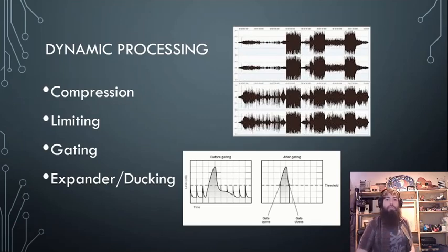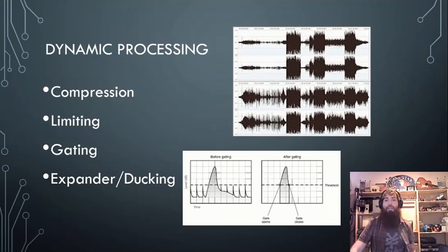Some examples of dynamic processing include compression, limiting, gating, expanding, and ducking. Let's take a look at some of that in action.